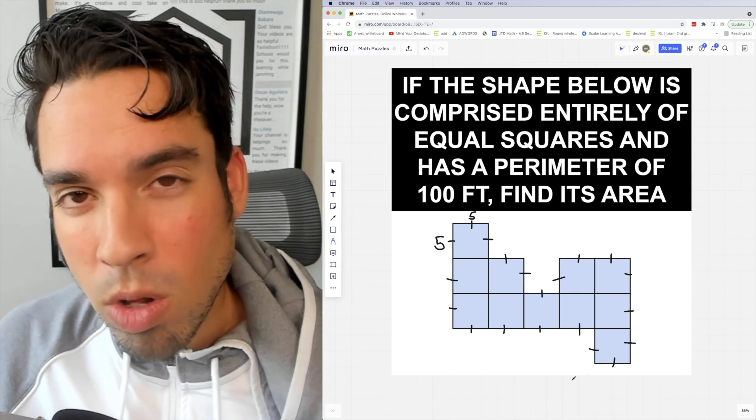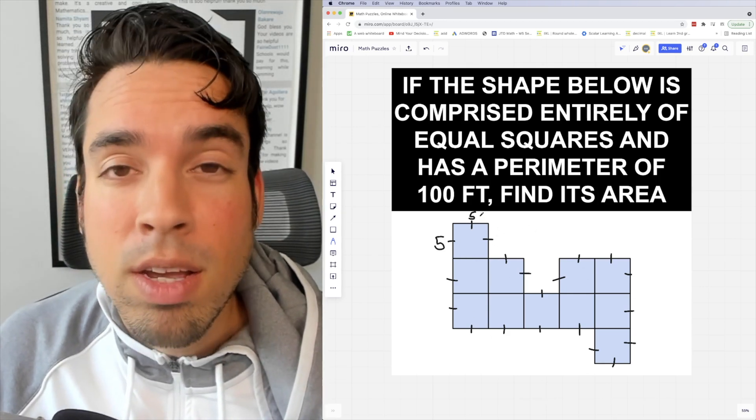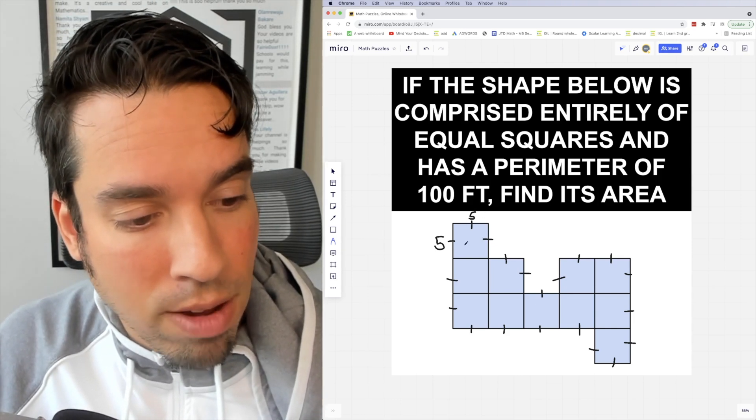That means all of these side lengths are 5, which means all of the squares are 5 by 5 squares. To get the area of a square, you multiply the two side lengths: 5 times 5, which gives you 25.